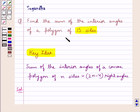We are given a polygon of 13 sides. So the number of sides of the polygon is equal to 13. That is, we have n is equal to 13.